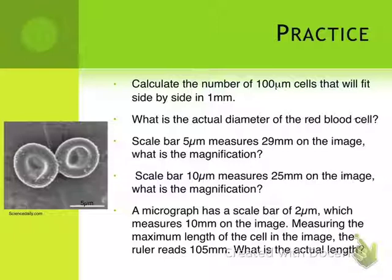Question five says a micrograph has a scale bar of two micrometers which measures 10 millimeters on the image. Measuring the maximum length of the cell in the image, the ruler reads 105 millimeters. What is the actual length? In this case, you're going to be using the scale bar equation.